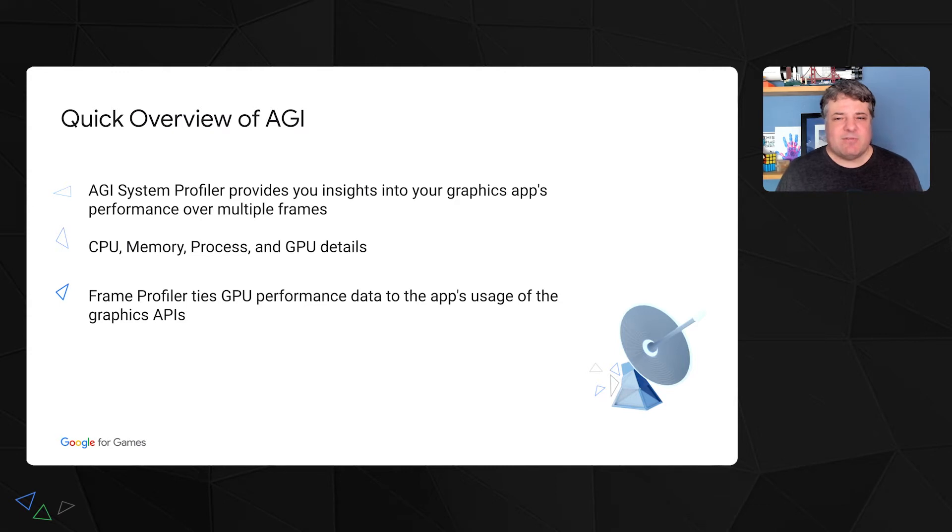AGI's new Frame Profiler aims to answer these kinds of questions by tying the profiling data back to your app's usage of GLES or Vulkan. AGI's Frame Profiler will trace your app's Graphics API calls and then replay them while recording profiling data from the GPU driver. This data is then matched up with the traced API calls so AGI can help you find where in your game to make changes to eliminate GPU bottlenecks and performance issues. With the Frame Profiler, you can now glean and act on Performance Insights to improve your app's usage of the Graphics API.